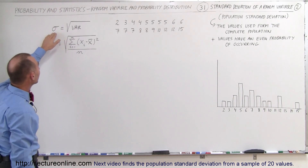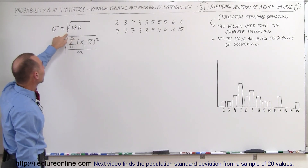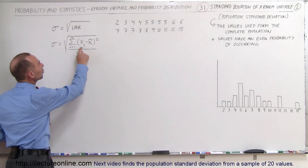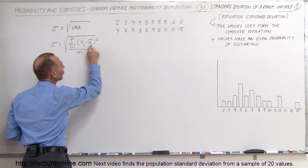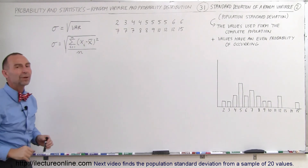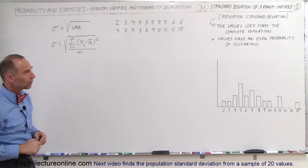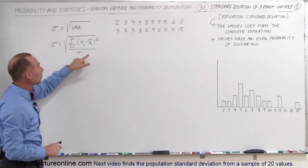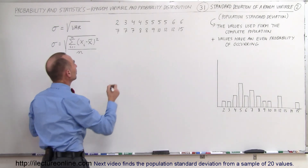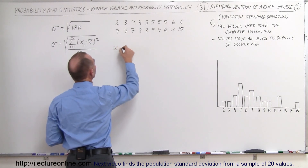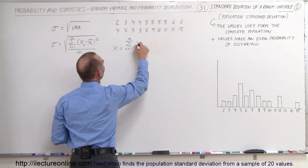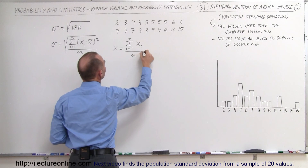The standard deviation is simply the square root of the variance. The variance equals the sum of the difference between each number and the average, that quantity squared, divided by the total number n. The first thing we want to do is find the average value. The average x̄ equals the sum from i equals 1 to n of x-sub-i, divided by n.